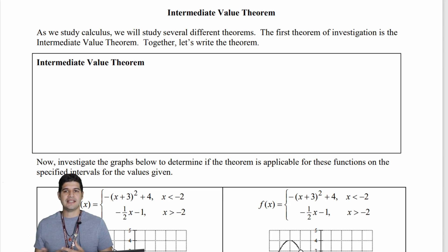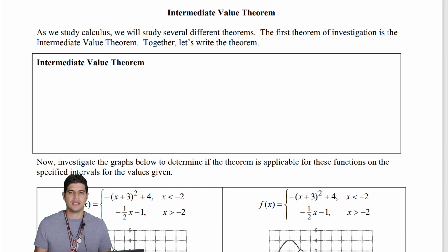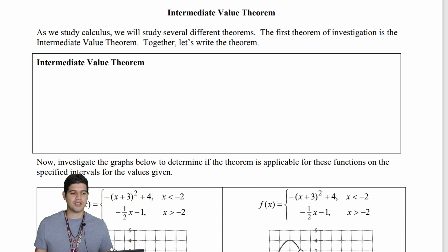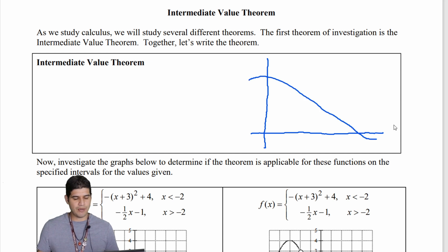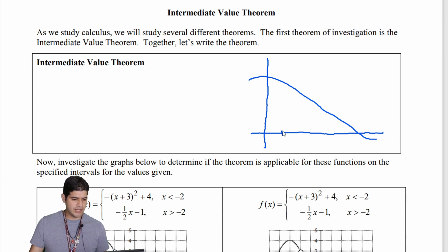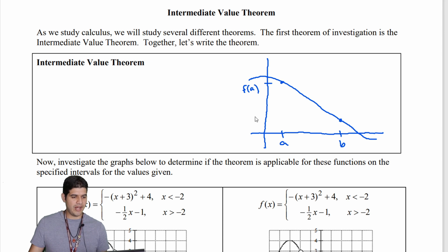We're going to be studying several theorems related to calculus over the course of this year, and the first theorem we're looking at is the intermediate value theorem. I'm going to start with a graph — I'm going to graph some random curve. Here's point a and here's point b, and the y-value at a we're going to call f of a, and the y-value at b we're going to call f of b.